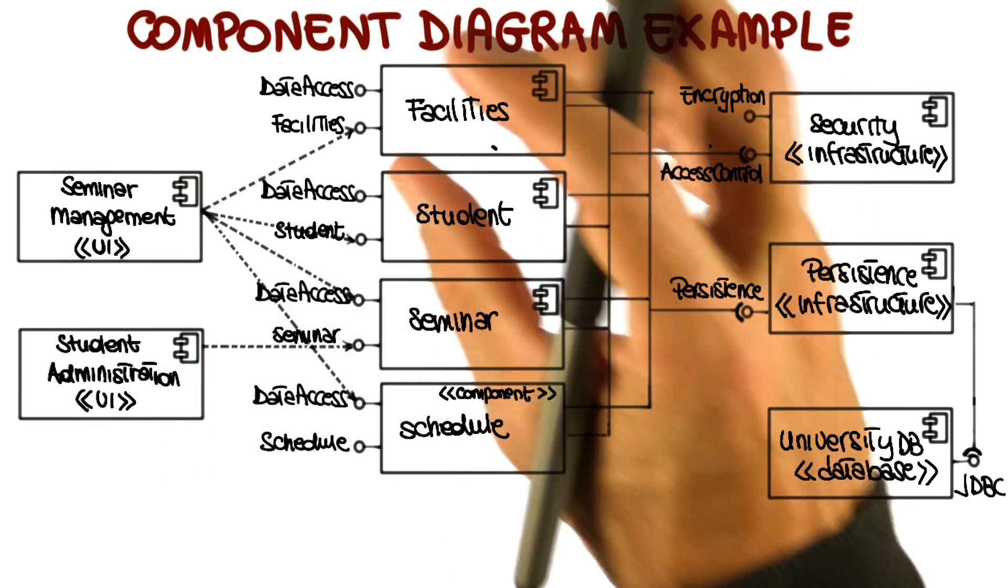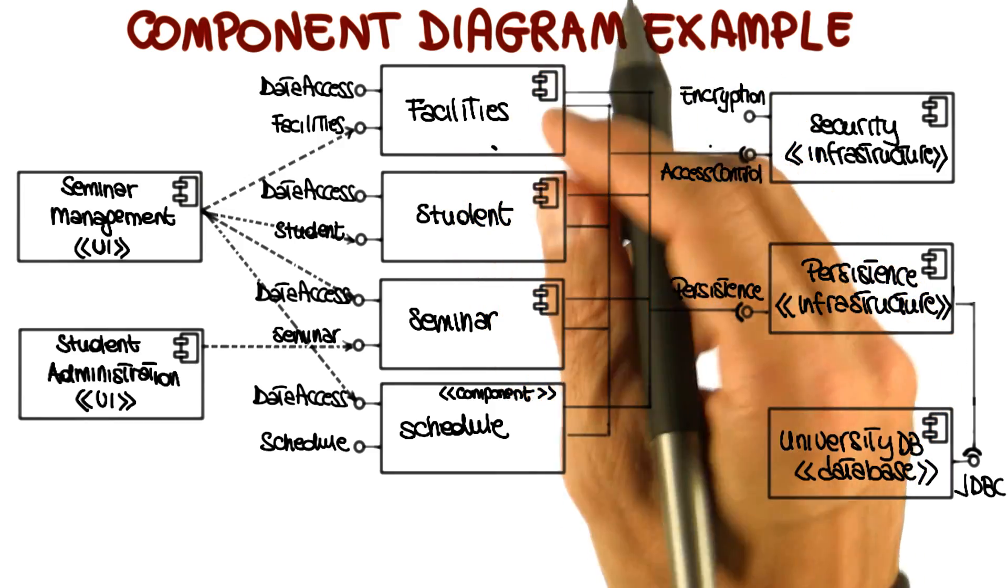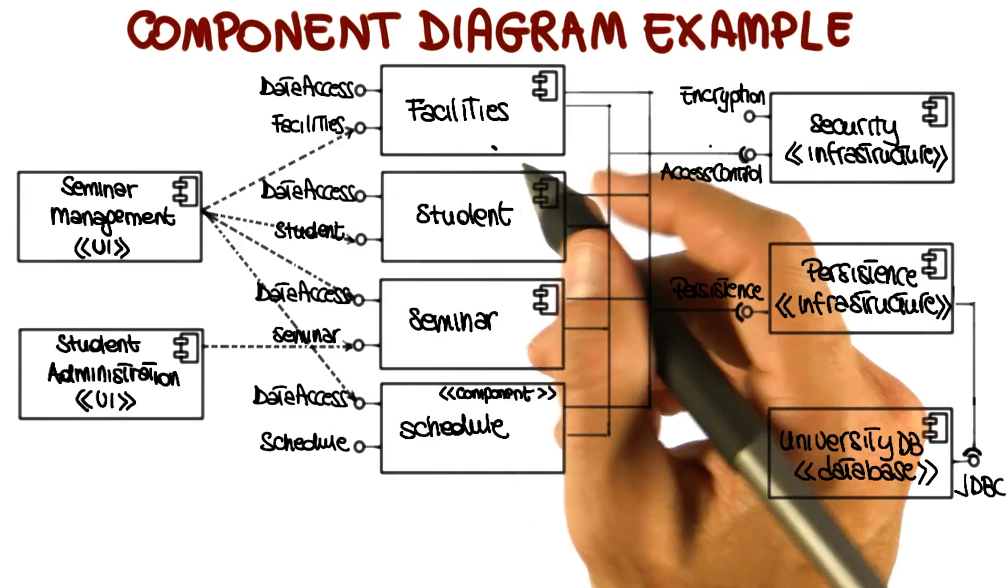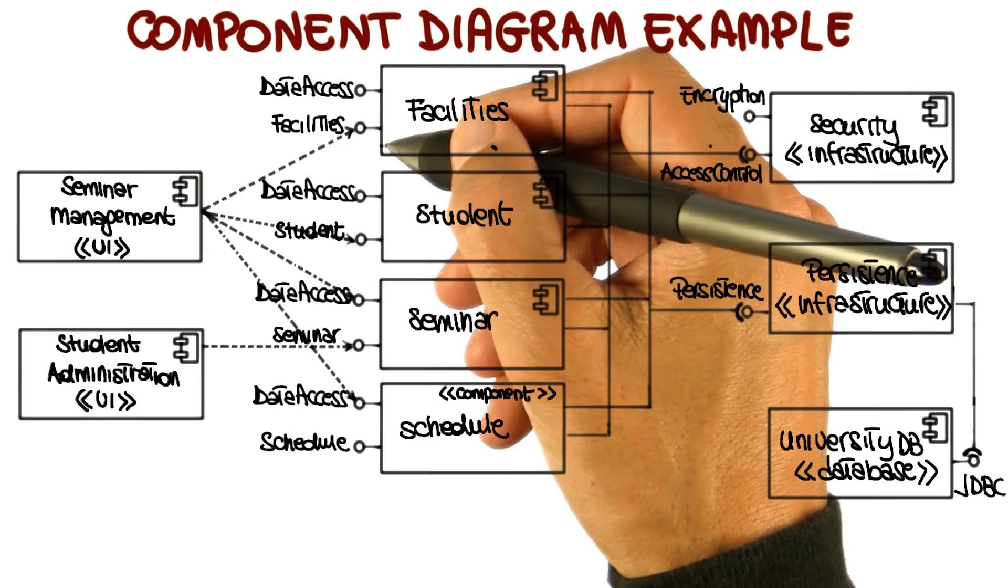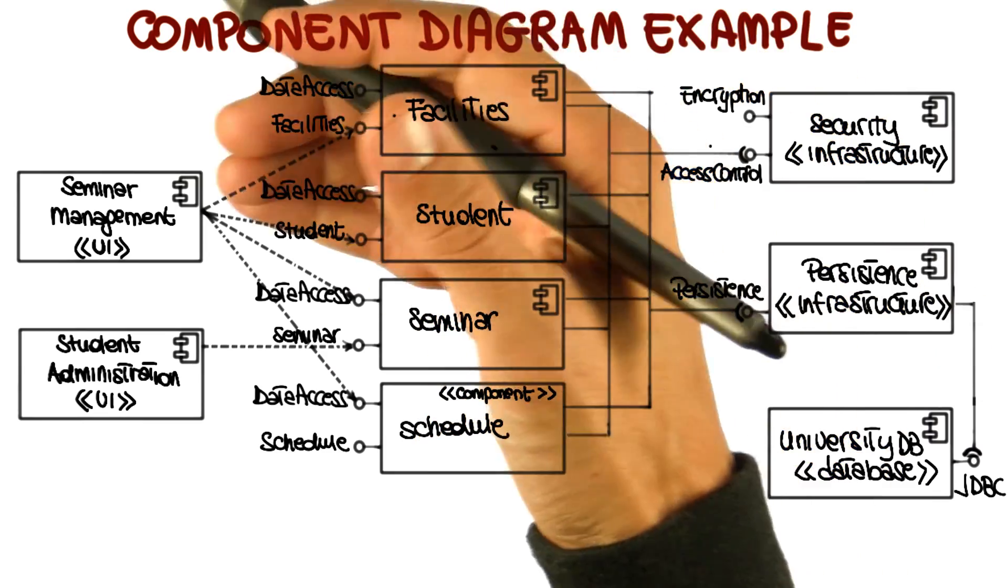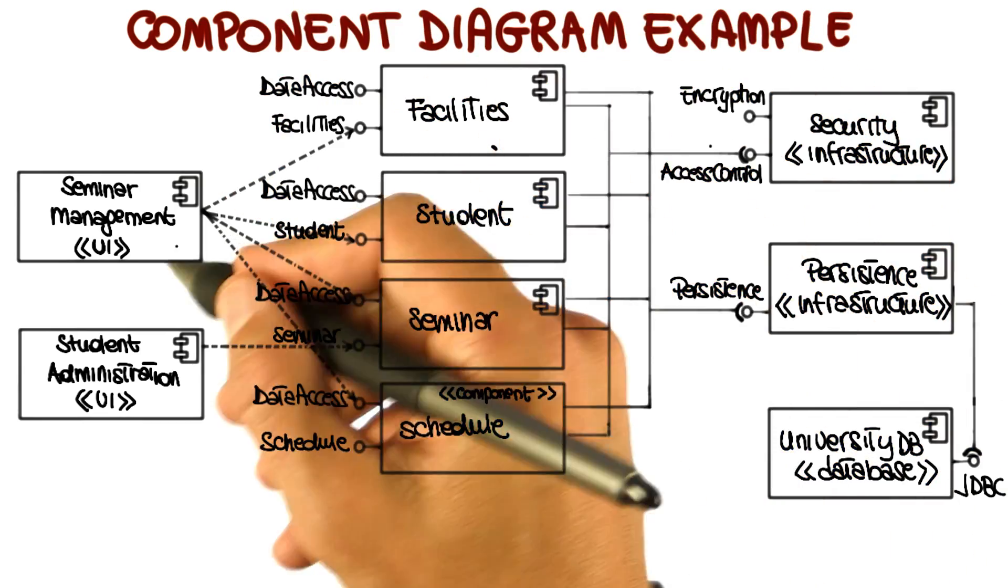So that's all I wanted to say on the component diagrams, but again, the key piece of information is that they represent components in the system where a component consists of one or more classes, indicate the interfaces that these components provide or require, and describe the interactions between these components.